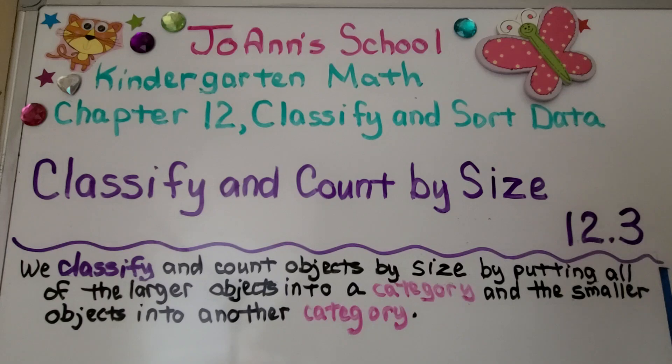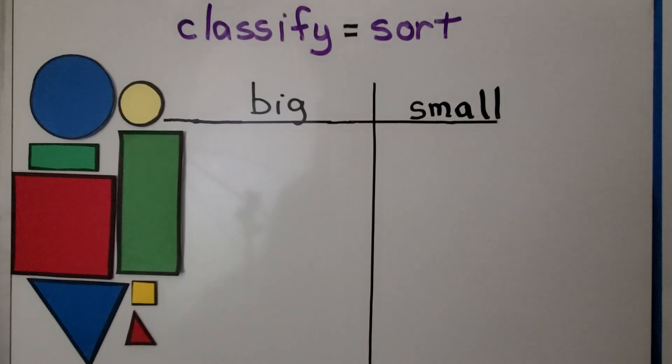We sort them by big and small. When we classify objects we sort them into different sets by following a rule. We can classify objects by their size.